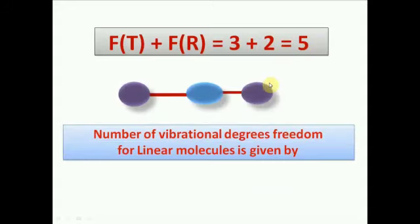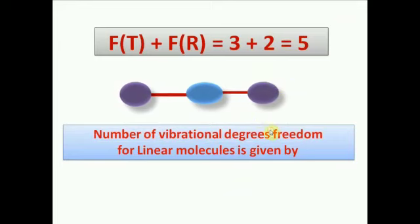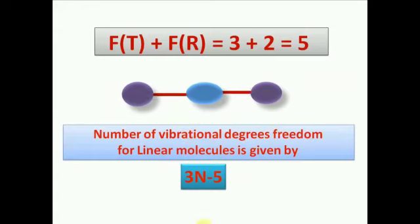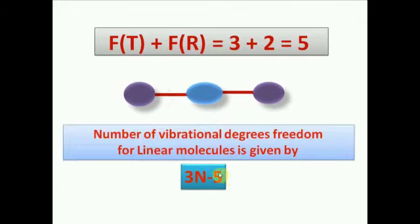Therefore, the number of vibrational degrees of freedom for a linear molecule is given by the formula 3n minus 5.